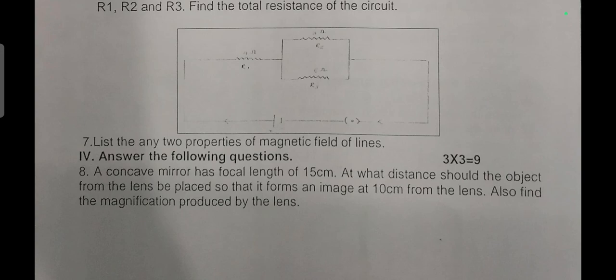Answer the following question for three marks. A concave mirror has focal length of 15 centimeter. At what distance should the object from the lens be placed so that it forms an image at 10 centimeter from the lens? Also find the magnification produced by the lens.